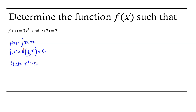We've satisfied the condition that the derivative is 3x squared. We can easily take our derivative here: f prime of x is going to be 3 times x squared plus 0. So now we need to make sure that this function also satisfies the condition that f at 2 equals 7.